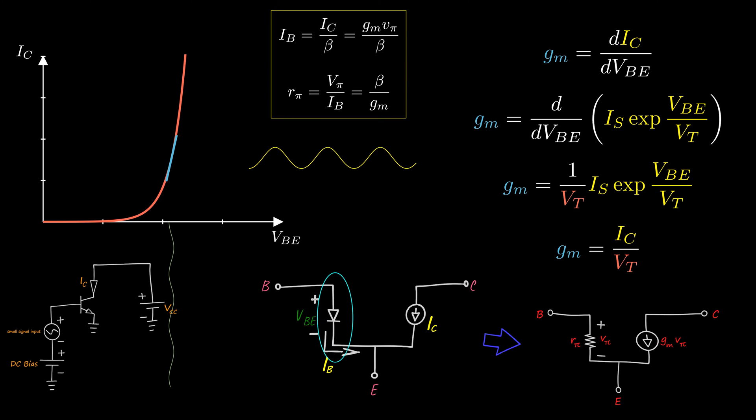So instead of a diode, it looks like there is a resistor between base and emitter whose value is beta over gm. This linear approximation of the transistor is called the small signal model. It's valid only for small signals.